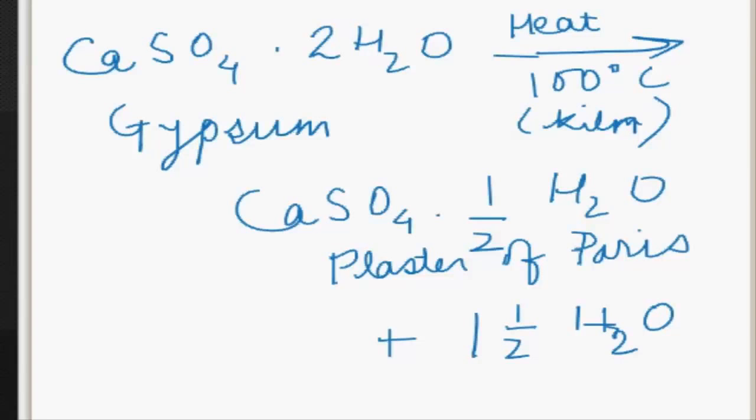In the preparation of plaster of Paris, heating of gypsum should be controlled carefully. The temperature during heating should not go above 100°C, because if gypsum is heated above 100°C then all its water of crystallization is eliminated and anhydrous calcium sulfate — called dead burnt plaster — is formed, and it does not set like plaster of Paris on adding water.